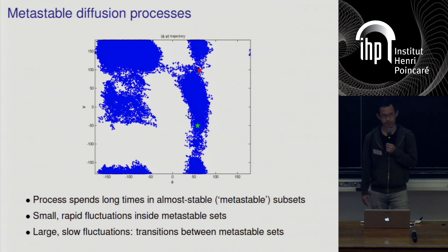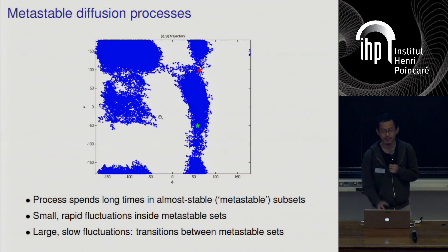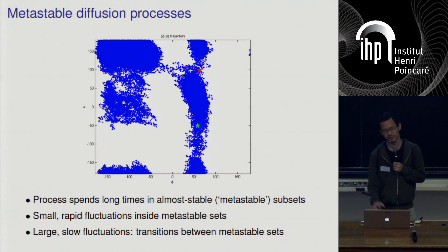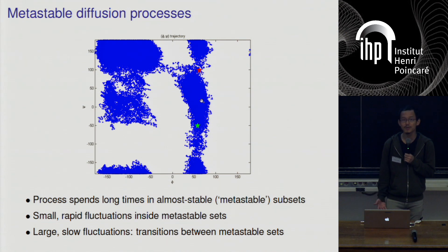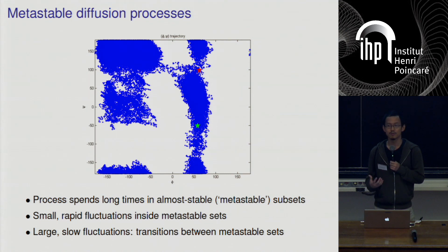Here's another example of a metastable diffusion process, except that the state space is now two-dimensional — the product of the circle with itself. Here you can already imagine that some of the questions we might ask are: let's suppose we're in this metastable set, or for a more interesting example, let's suppose we're here. How do we get from this metastable set to this one? There are many ways to do this, and the simplest naive law of large numbers might not give you such a structured way of analyzing these transition paths.